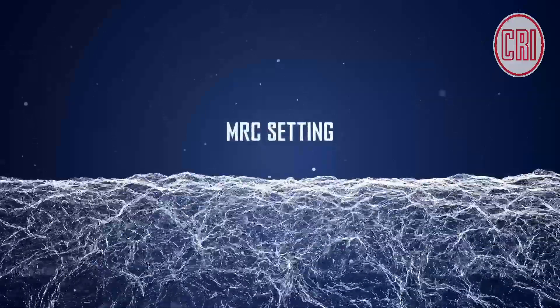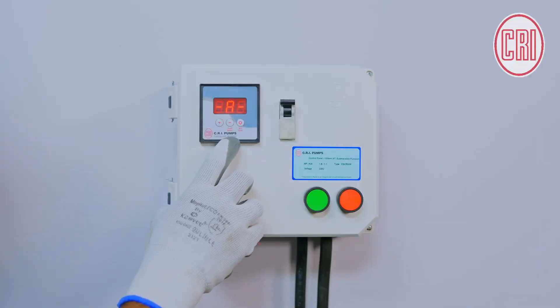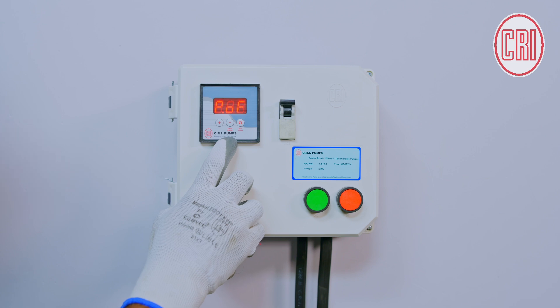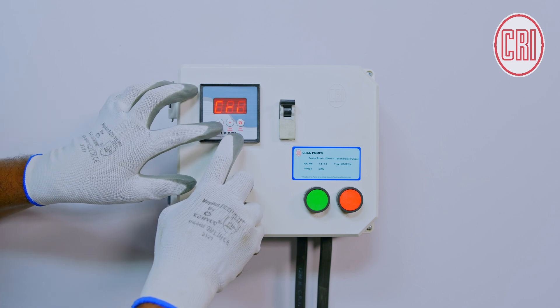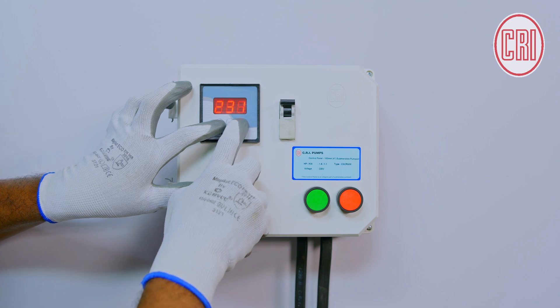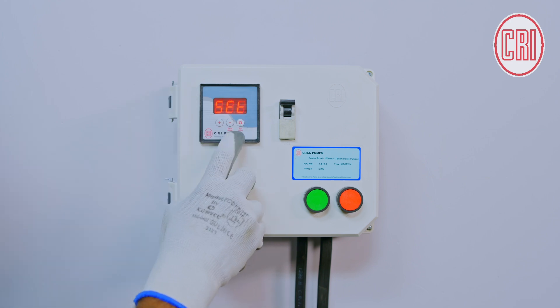MRC Motor Rated Current. First, let us set the MRC, which is Motor Rated Current that is available in the nameplate. Now, let us see how to set the MRC. Press and hold the Plus button, and simultaneously press the Set button. It will reach the Set mode. If we press it again,